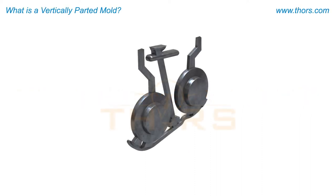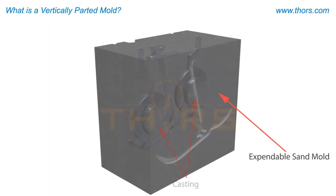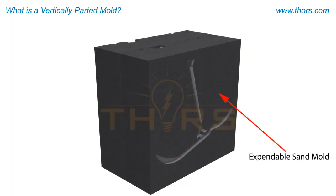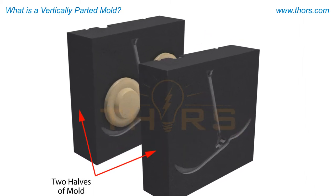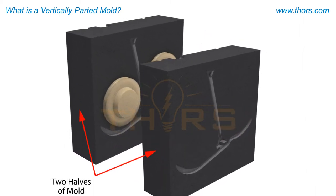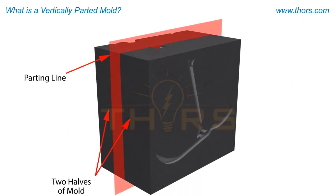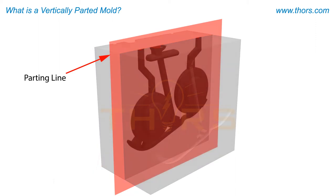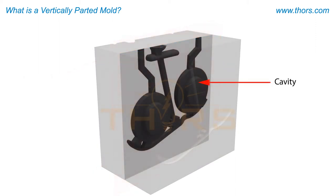When producing a casting from any of the bonded sand molding processes, an expendable sand mold is commonly used. A typical mold consists of at least two halves that, when closed together at the parting line, form a cavity in the desired shape of the casting.